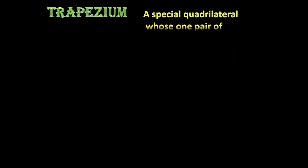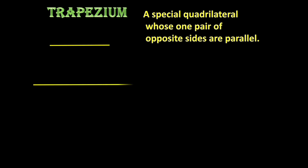What are some special quadrilaterals? We will learn them one by one. The first one is trapezium. A trapezium is a special quadrilateral. It has a pair of opposite sides which are parallel. A quadrilateral whose one pair of opposite sides are parallel is called a trapezium. The parallel sides are called bases and the non-parallel sides are called legs of the trapezium.